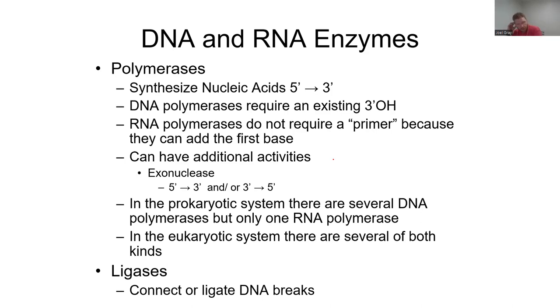That means if they add the wrong nucleotide, what they can do is go backwards and say, oh, got to get rid of that. That wasn't supposed to be an adenine or an adenosine monophosphate. There's only one RNA polymerase in the eukaryotic system. There are several of both RNA and DNA polymerases. Ligases are another class of RNA and DNA enzymes and they connect or ligate DNA breaks.